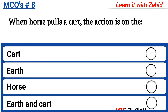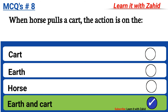When a horse pulls a cart, the forces that the earth exerts on the cart and on the horse: option A cart, option B earth, option C horse, option D earth and cart. The correct answer is option D, earth and cart.